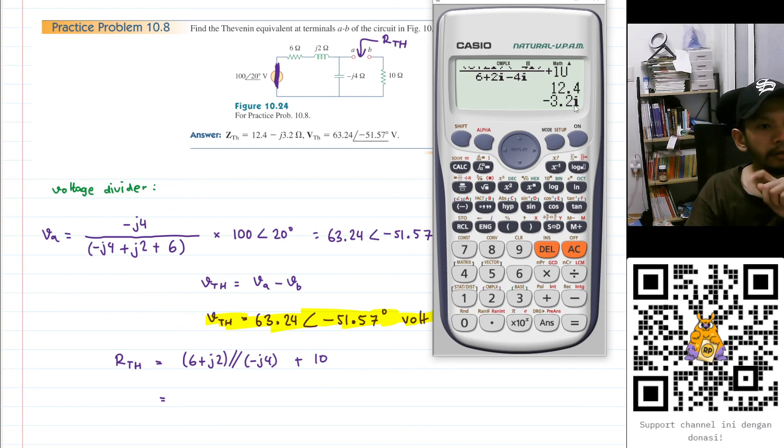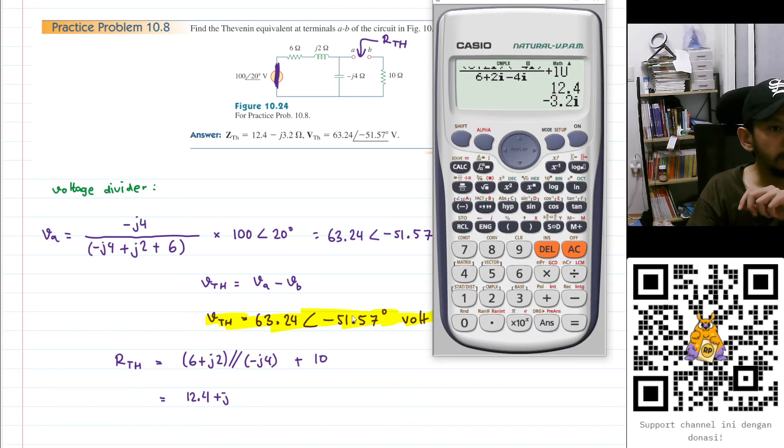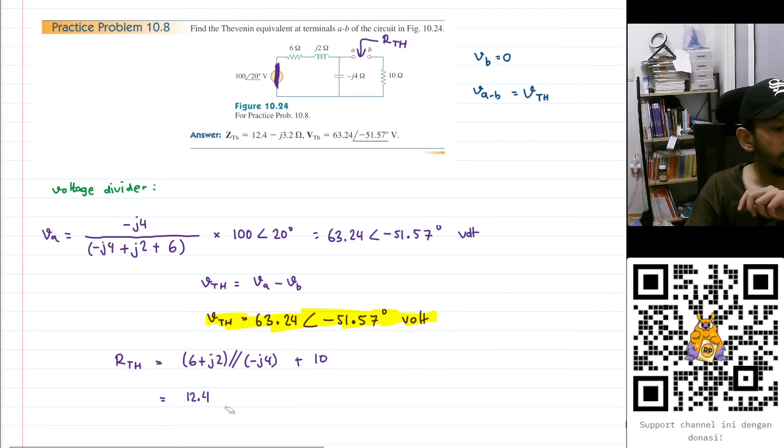And we will get 12.4 minus j3.2, and the unit will be ohm. So this is the Thevenin resistance. We can just draw the circuit with VTH and RTH, but the values are these.